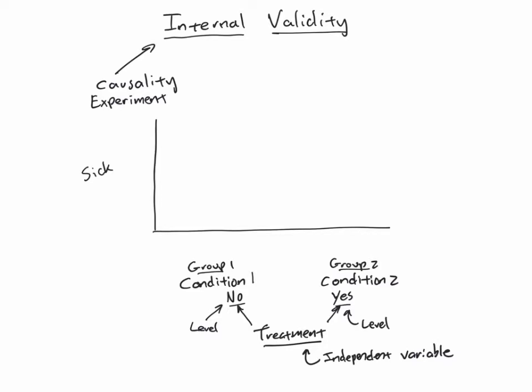We've talked about this in terms of groups, but of course this could also be talked about in terms of time — time one and time two. In this case, instead of comparing one group with another group at the same time, now we're looking at comparing one single group at two different times. So we can compare two different groups at the same time, or one group at two different times. That's why I used the terms condition one and condition two — the conditions can be either two different groups of people, or the same people at two different times.